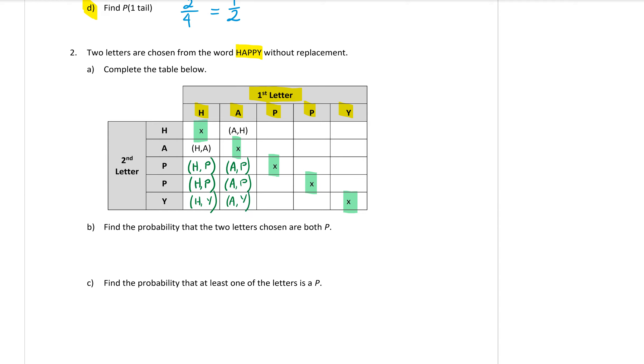Then the third column, the P is first, so that would be P H, then it would be P A. Skip that one because we can't have that same P chosen twice, but we can have the first P chosen with the second P, so it is still possible to get two P's. And P Y.